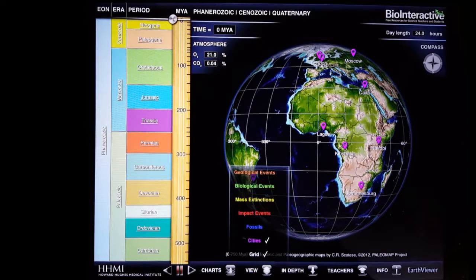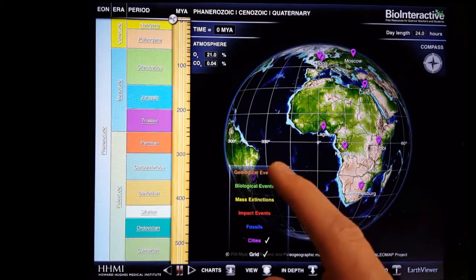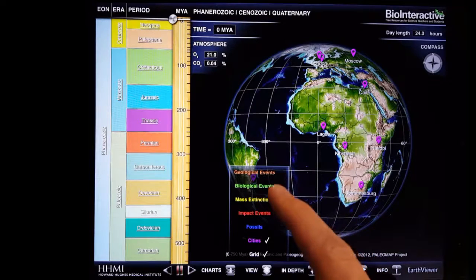The View button allows us to change what elements we see on the map of the Earth. We can select to see biological, geological, and impact events,